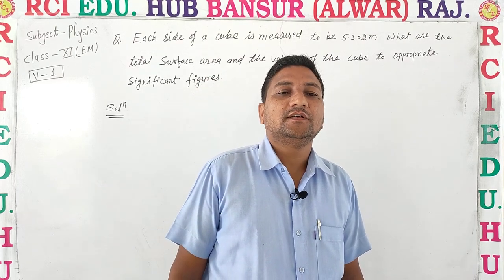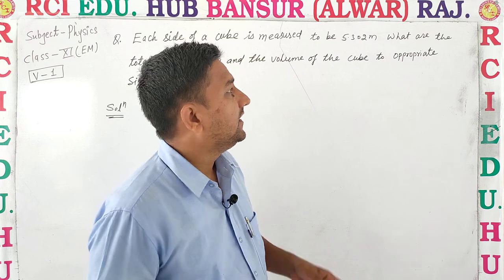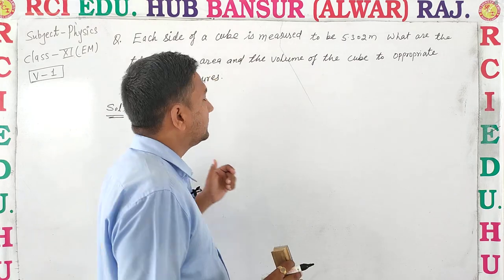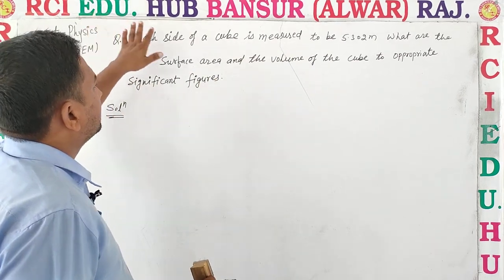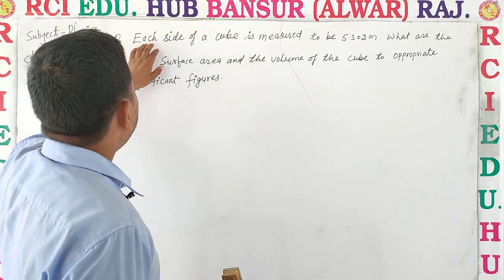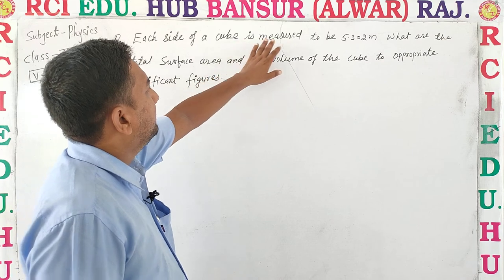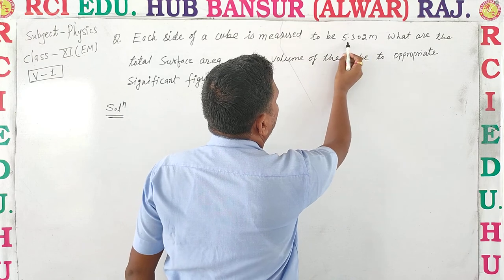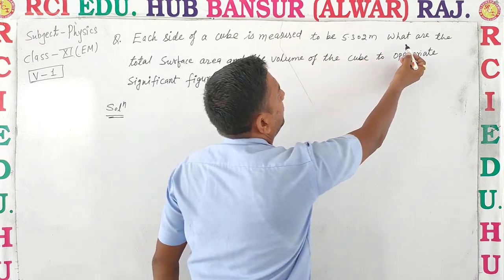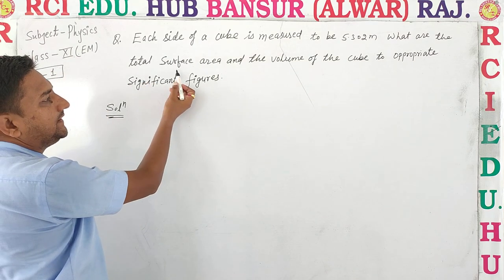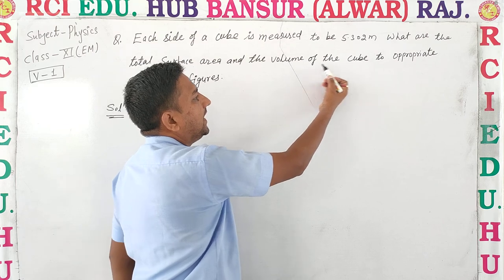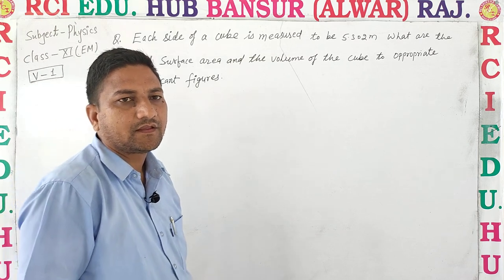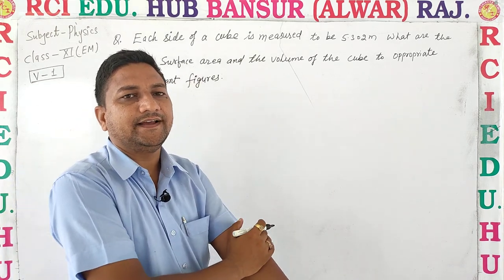Hello students, welcome to Physics Online Classes, RCI Online Classes. Our next topic is numericals of significant figures. First numerical: each side of a cube is measured to be 5.302 meters. What are the total surface area and the volume of the cube to appropriate significant figures?